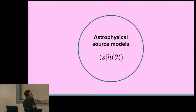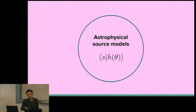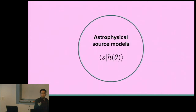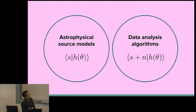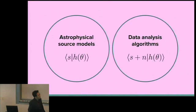In gravitational wave astronomy, we want our astrophysical source models to be as close to physical reality as possible, because we want to maximize the overlap between any true signal S and our predicted waveform models H. One of the main tasks in data analysis is to identify the particular waveform which maximizes its overlap with noisy data from detectors — given by S plus N — and this gives us information about the source parameters of the signal theta.